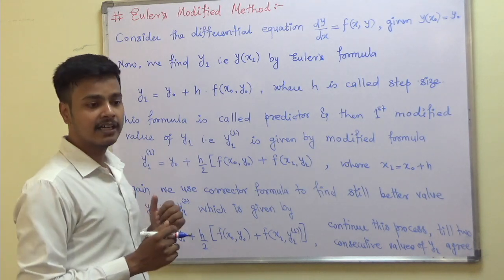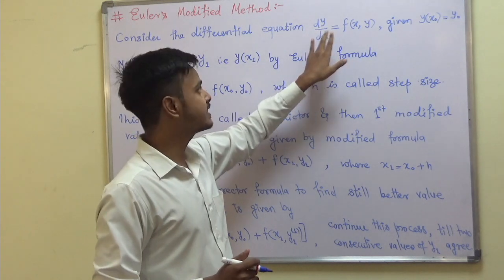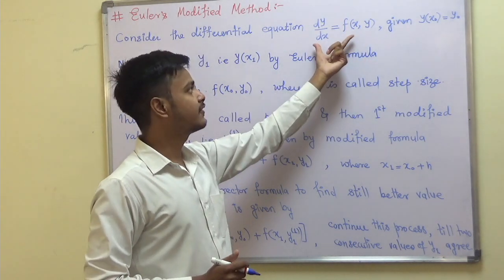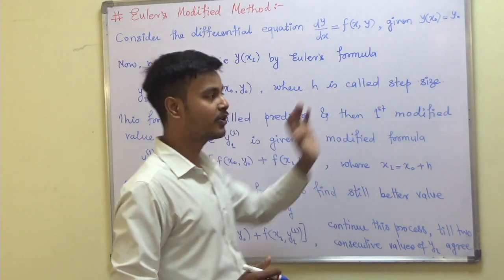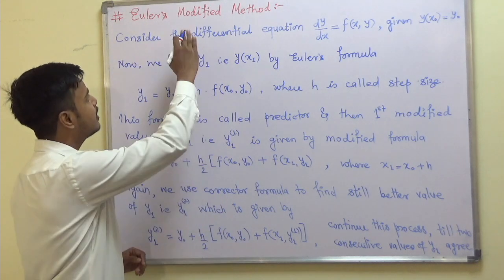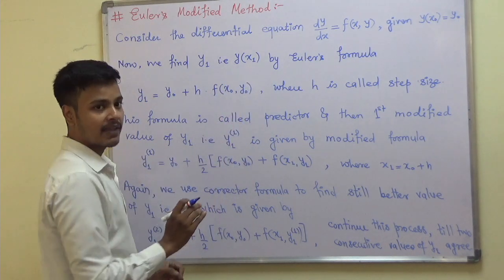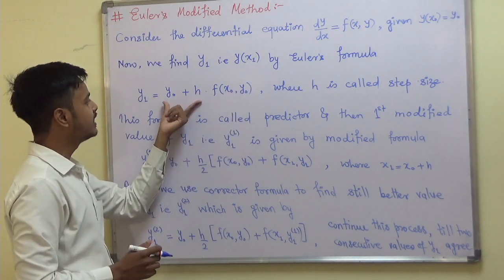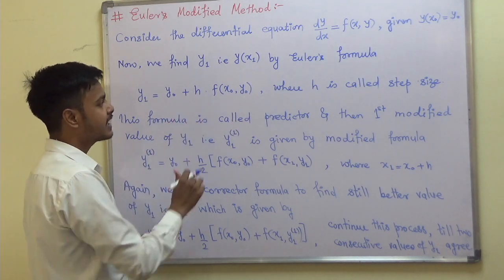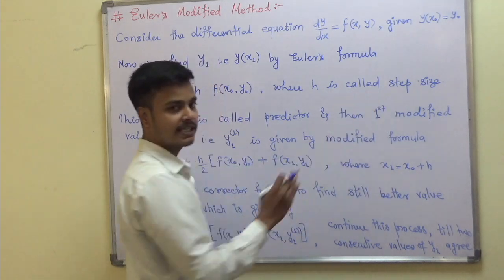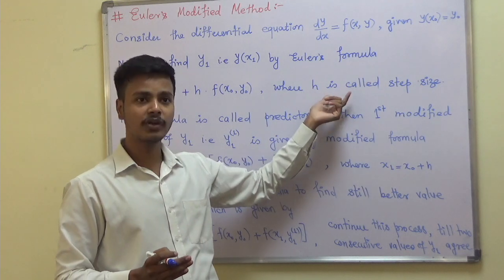Let us see the procedure. We will be given a system dy/dx = f(x,y) — some first order differential equation — along with some initial values. With the help of Euler's modified method we are going to find out y(x1). To get y(x1) we make use of Euler's formula, where h is the step size.